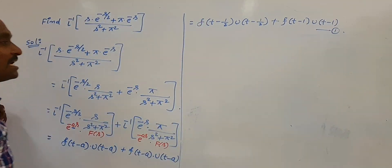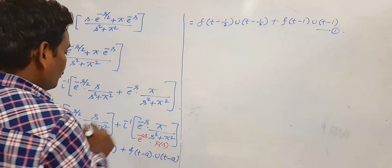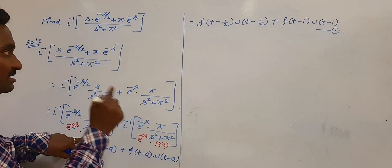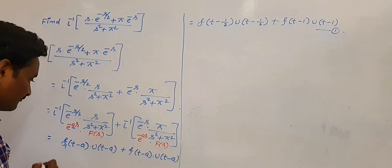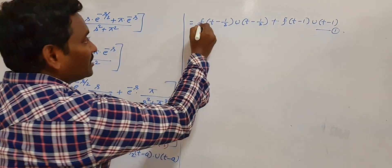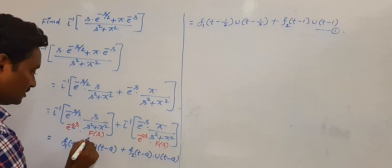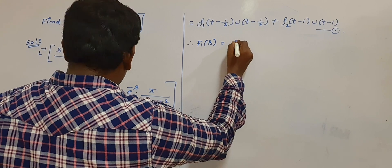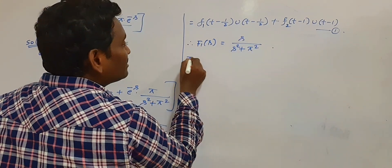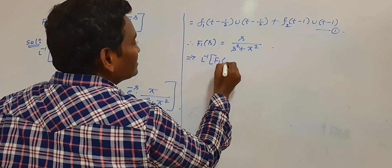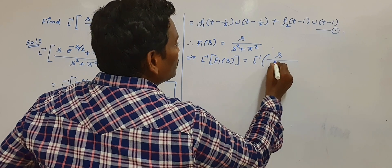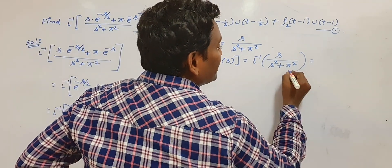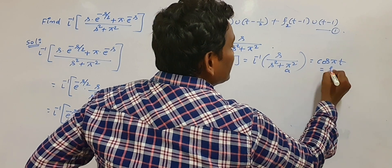It is enough to find the value of f(t) in both parts. What is F1(s)? F1(s) is s/(s²+π²). Calculate its L inverse: L inverse of s/(s²+π²) gives cos(πt), since L inverse of s/(s²+a²) = cos(at) and here a = π. So f1(t) = cos(πt).